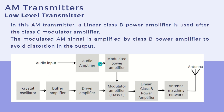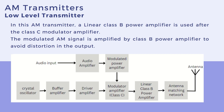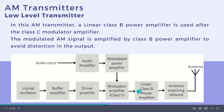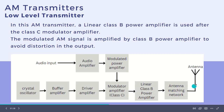The audio input or message signal is amplified using the audio amplifier and then modulated using a power amplifier. The carrier signal is given to the buffer amplifier for amplification and passed to the class C modulator amplifier. After that, it is given to the class B power amplifier, which performs the major power amplification and feeds the signal to the antenna via the antenna matching network.